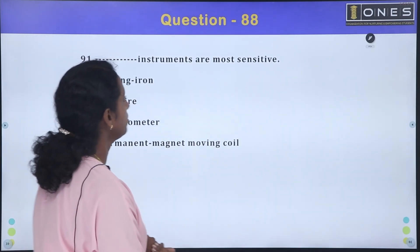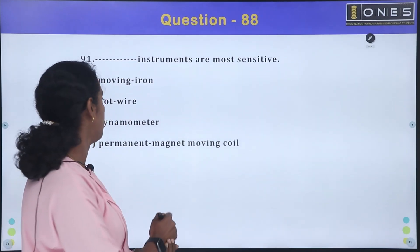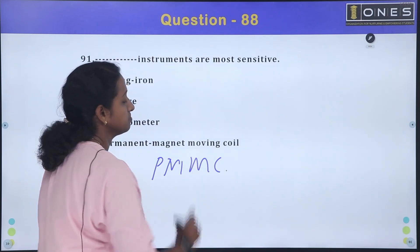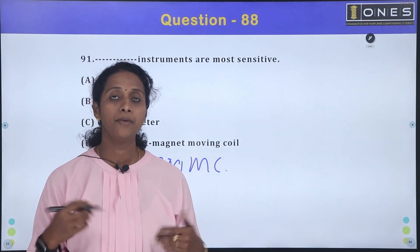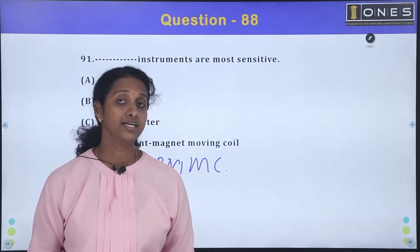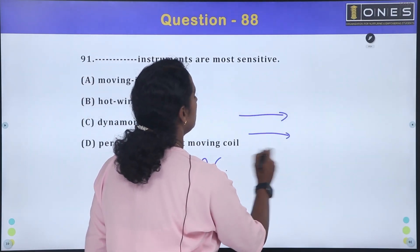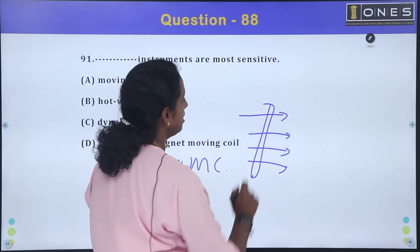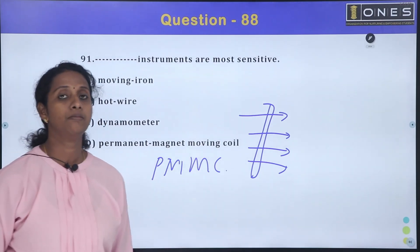Permanent magnet moving coil (PMMC) instruments are the most sensitive. The moving coil operates within the magnetic field of a permanent magnet, producing deflection.